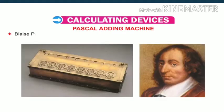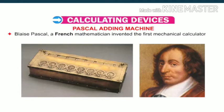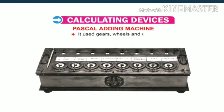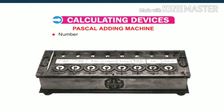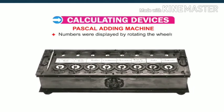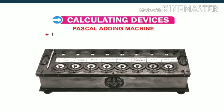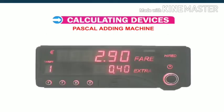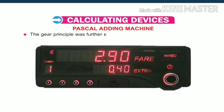Blaise Pascal, a French mathematician, invented the first mechanical calculator at the age of 19 in the year 1642. It used gears, wheels and dials. Numbers were displayed by rotating the wheels. It was capable of performing addition and subtraction. The gear principle was further employed in many mechanical calculators.